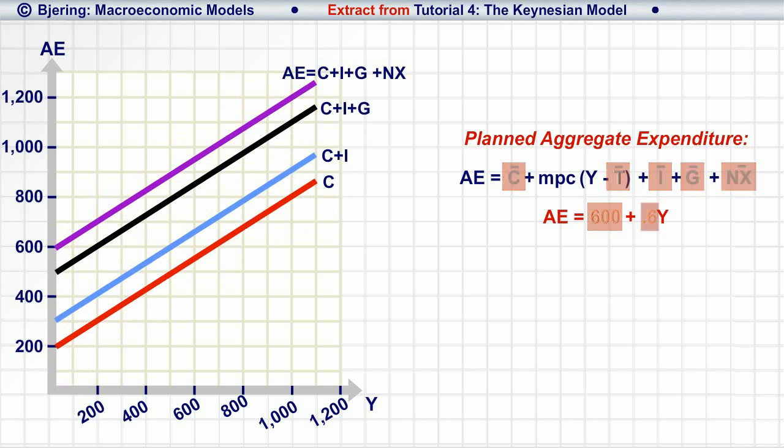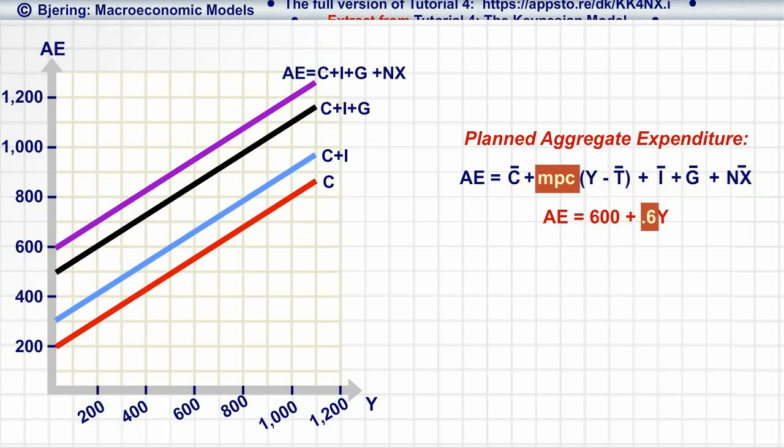Notice also that the slope of the AE function is determined by the slope of the consumption function, since that is the only function with a slope different than zero.